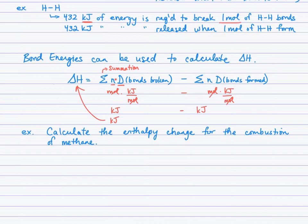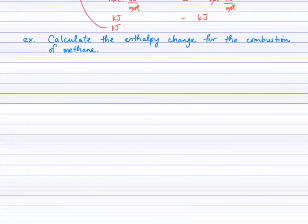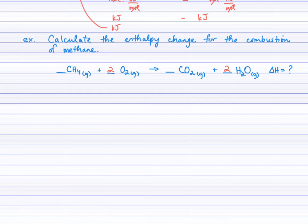So let's look at this example: calculate the enthalpy change for the combustion of methane. First, write a balanced equation for the combustion of methane. Pause the video, write the balanced equation, then check back. Here's the balanced equation for the combustion of methane — delta H equals question mark, which is what we've been asked to find. We're going to calculate the enthalpy change for this balanced equation as written.